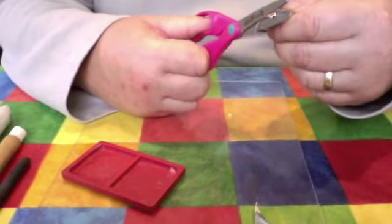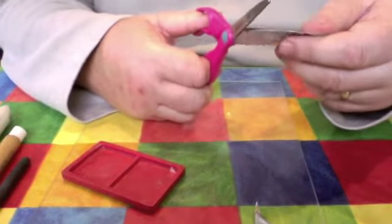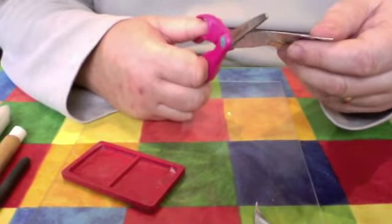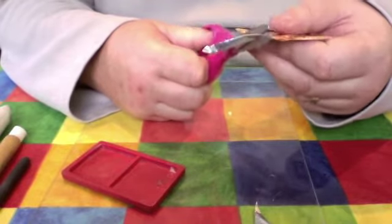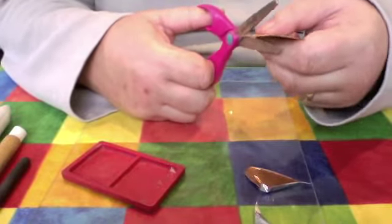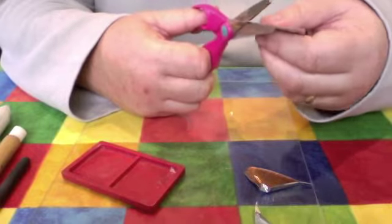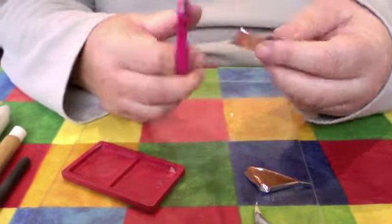There we go. So, it's rather like cutting tin foil with your scissors. Rather than blunt them, it tends to sharpen them.